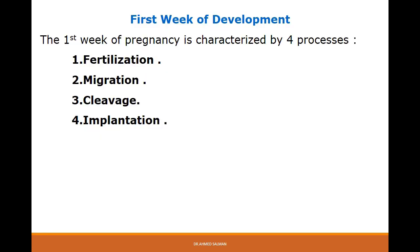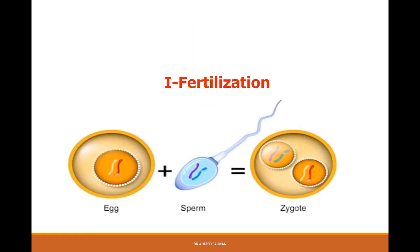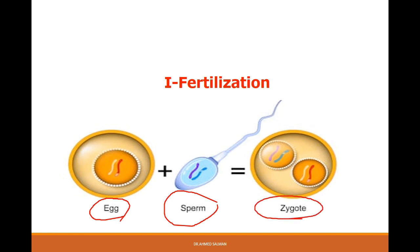During the first week of development, there are four events: fertilization, migration, cleavage, and implantation. We'll talk about the first event — fertilization. Fertilization means the fusion of the sperm and the mature ovum to form the zygote. This happens in the ampulla of the fallopian tube or uterine tube.